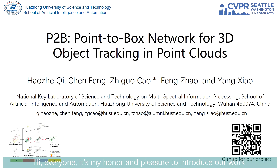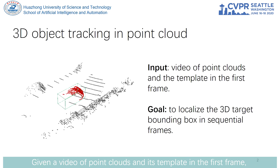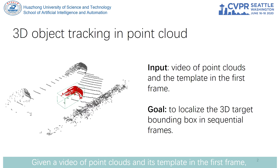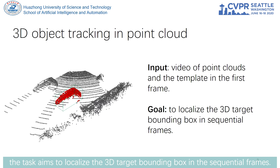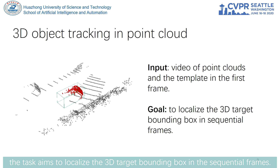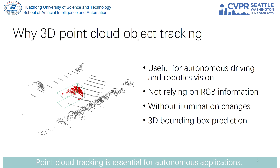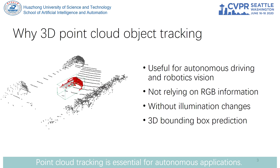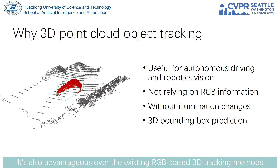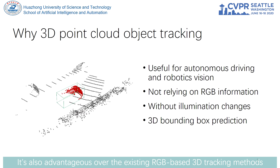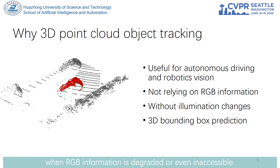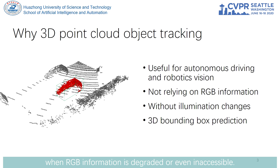Hi everyone, it's my honor and pleasure to introduce our work on 3D object tracking in point clouds. Given a video of point clouds and its template in the first frame, the task aims to localize the 3D target bounding box in the sequential frames. Point cloud tracking is essential for autonomous applications, and it's also advantageous over existing RGB-based 3D tracking methods when RGB information is degraded or even inaccessible.